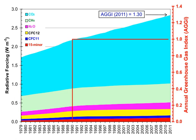A greenhouse gas is a gas that absorbs and emits radiant energy within the thermal infrared range. Greenhouse gases cause the greenhouse effect. The primary greenhouse gases in Earth's atmosphere are water vapor, carbon dioxide, methane, nitrous oxide, and ozone.